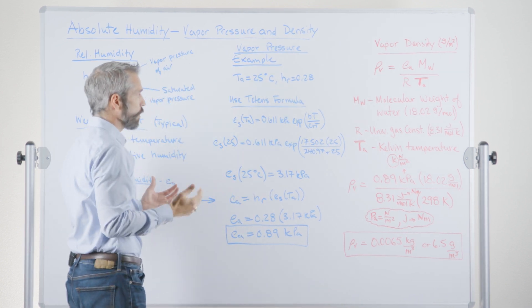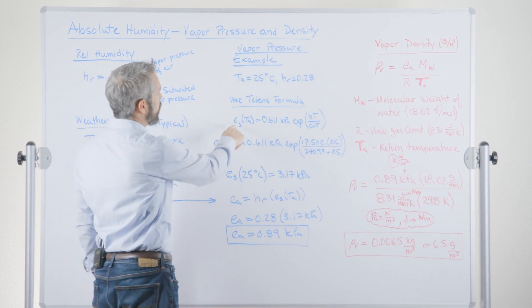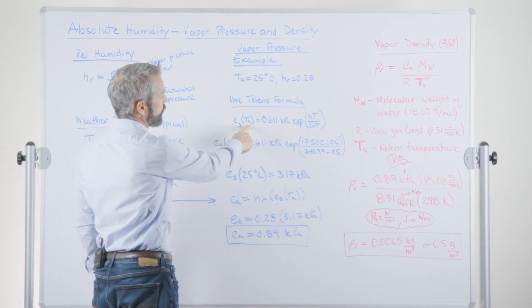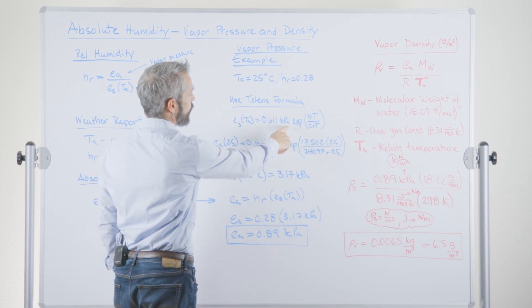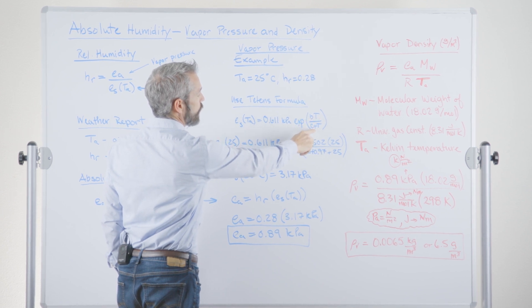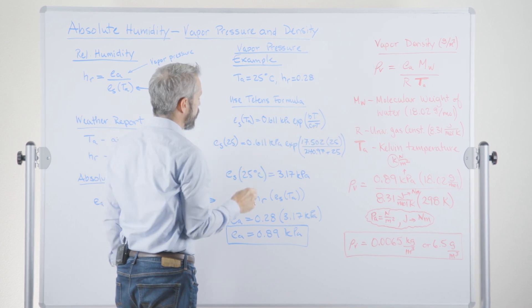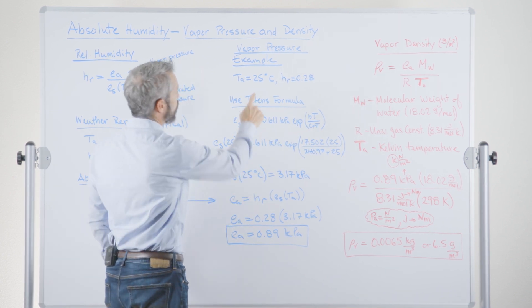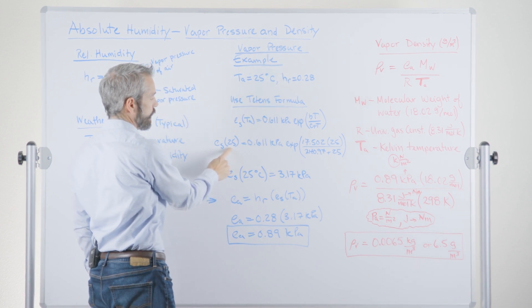First we'd use Tetens formula, which I talked about in another lecture. We'd say the saturation vapor pressure at the air temperature is equal to 0.611 kilopascals times the exponential of a constant times the air temperature divided by another constant plus the air temperature.